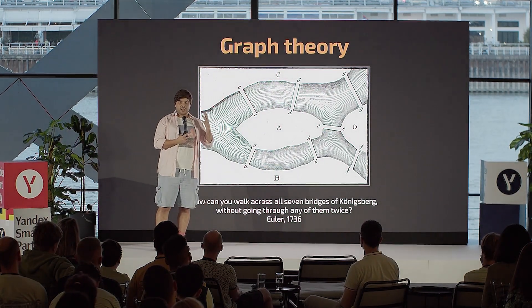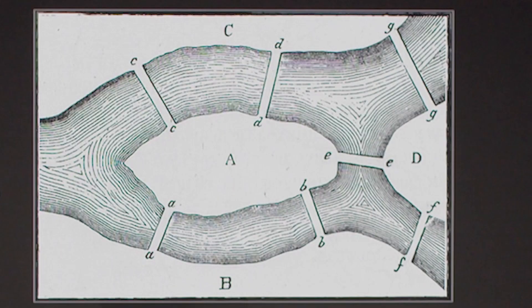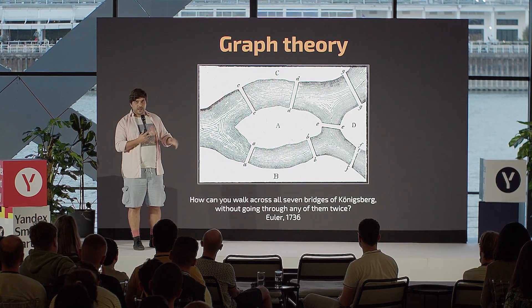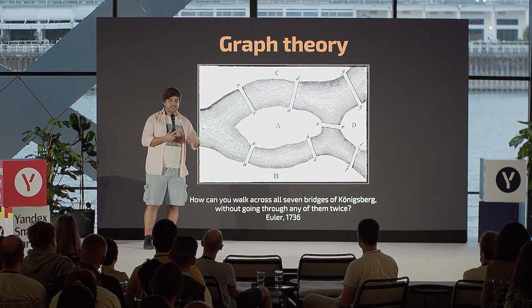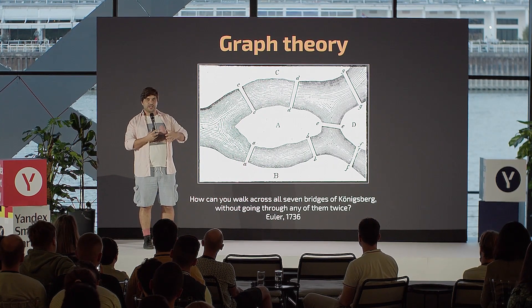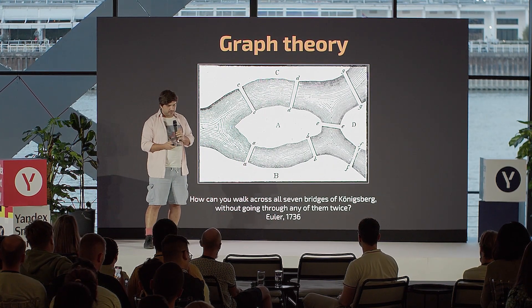He was interested in a simple question, whether you can find a path walking through these bridges so that you won't pass the same bridge twice. And the answer is no, you can't do that. But the question appeared so interesting that while solving it, Euler actually laid the foundation of graph theory.